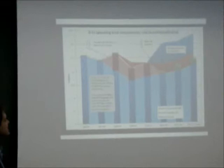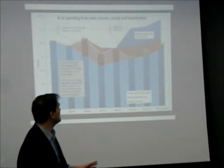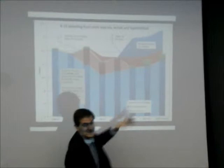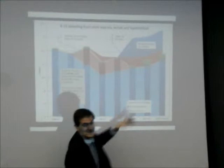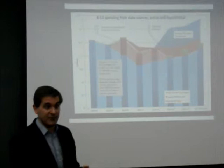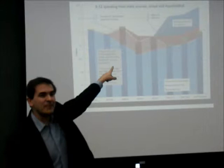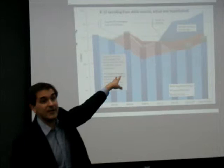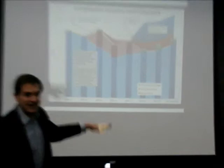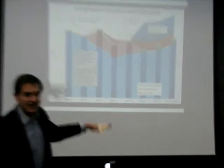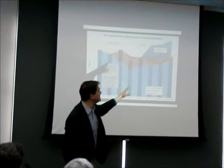Michigan Parents for Schools also has a graph showing two things that have caused the decline faster than inflation. One is the orange band — the diversion of money from the K-12 school aid fund into higher education. If you left that money in — if you funded universities from the general fund where they used to be funded — schools would be better off. I work at a university, but I don't want higher ed funded on the backs of the kids who are coming to my college.